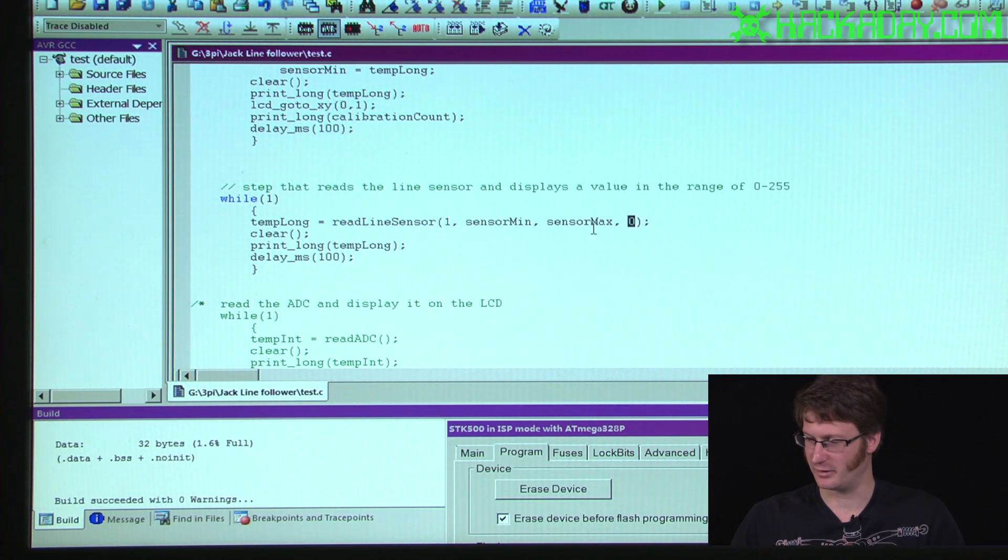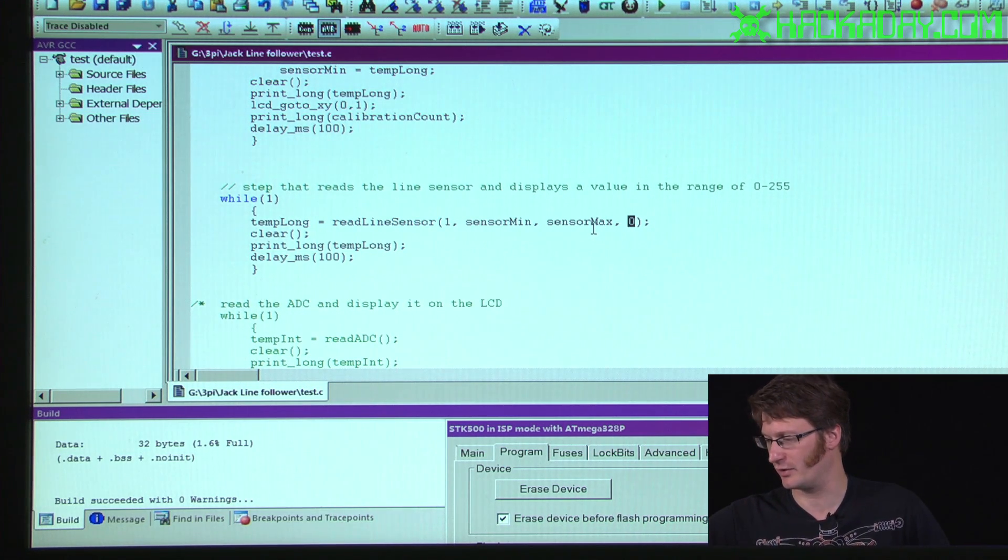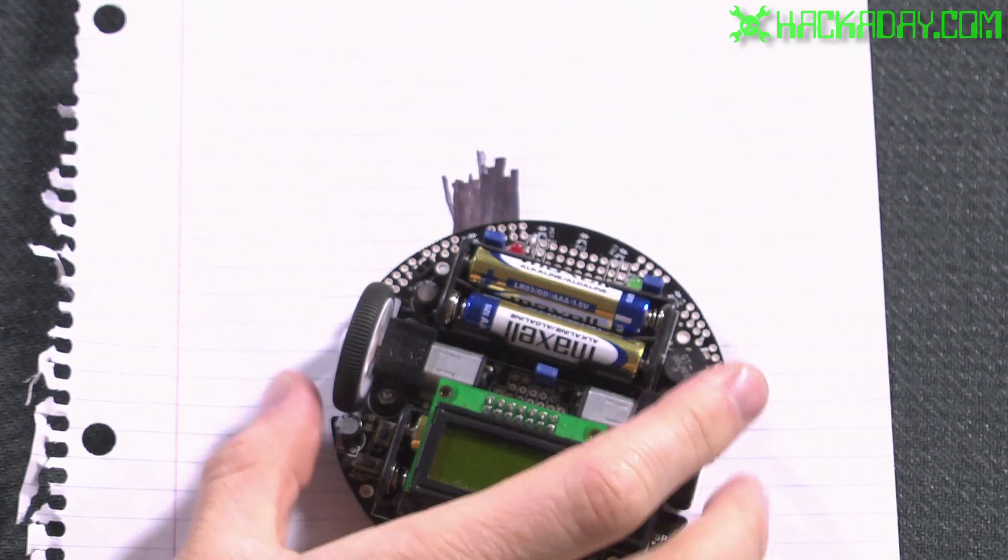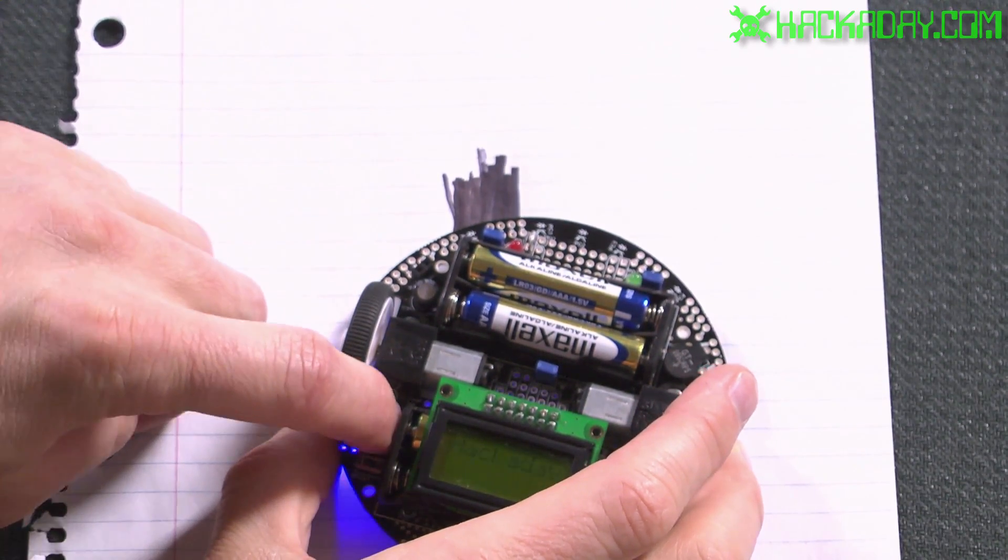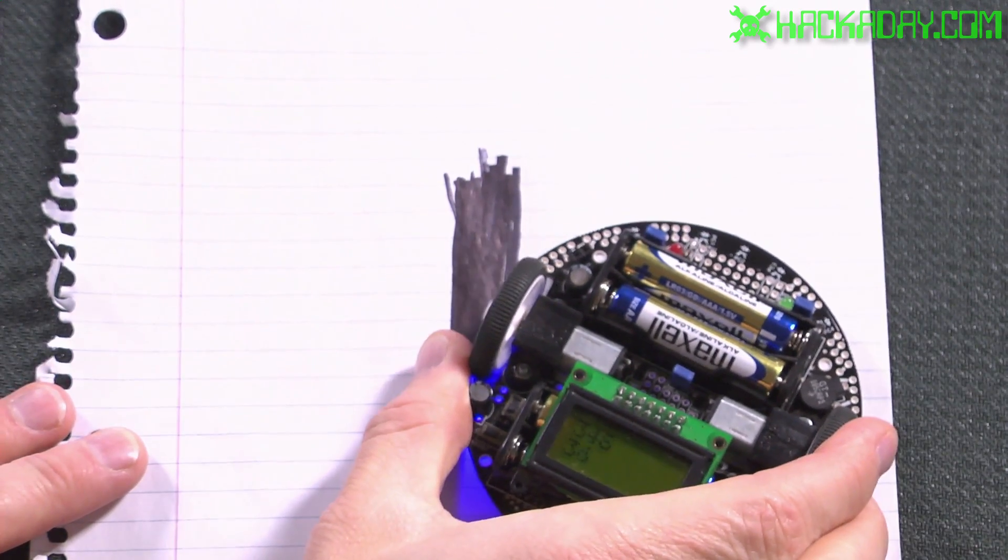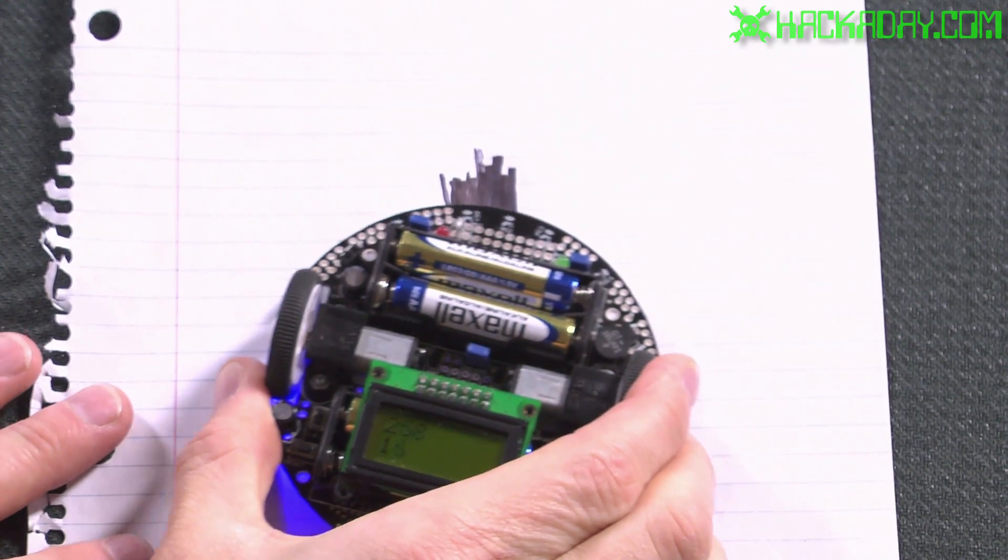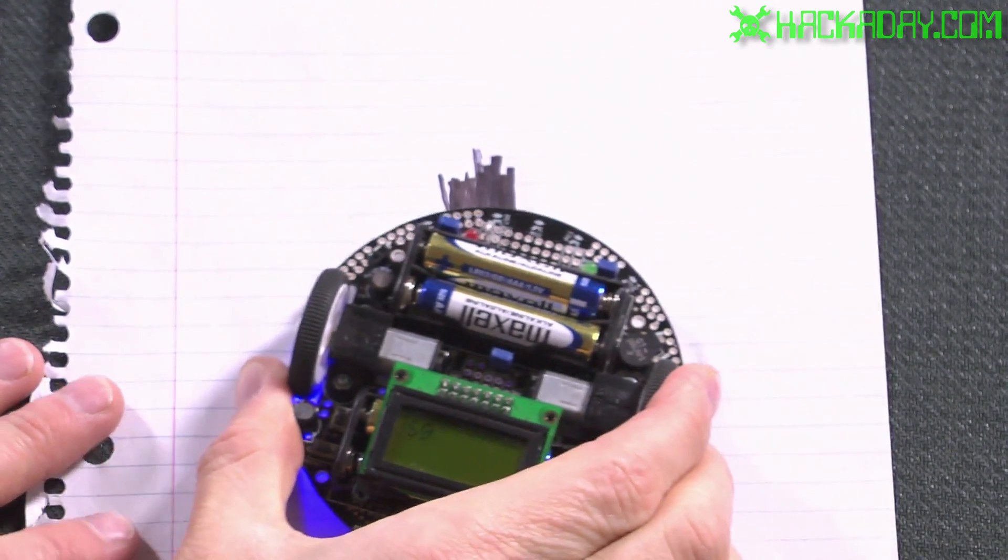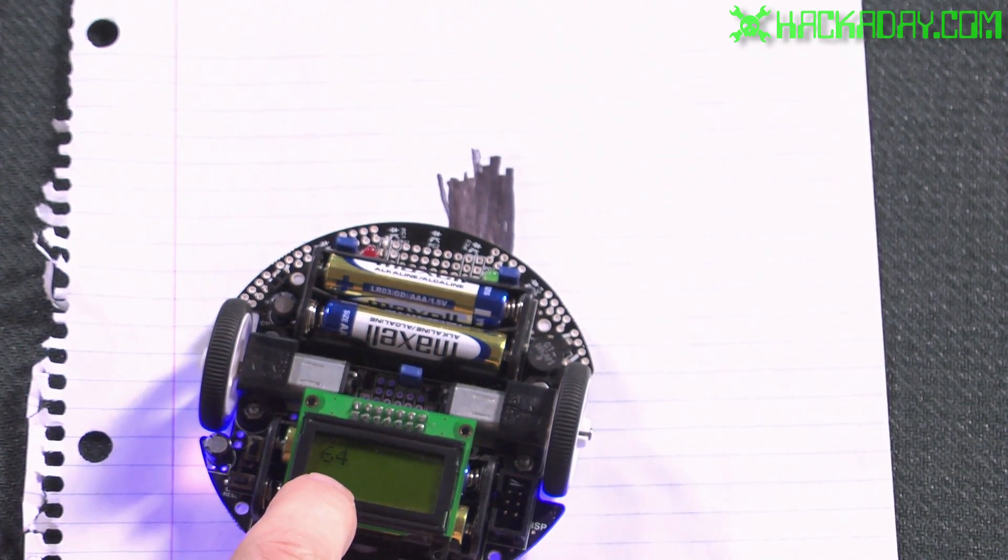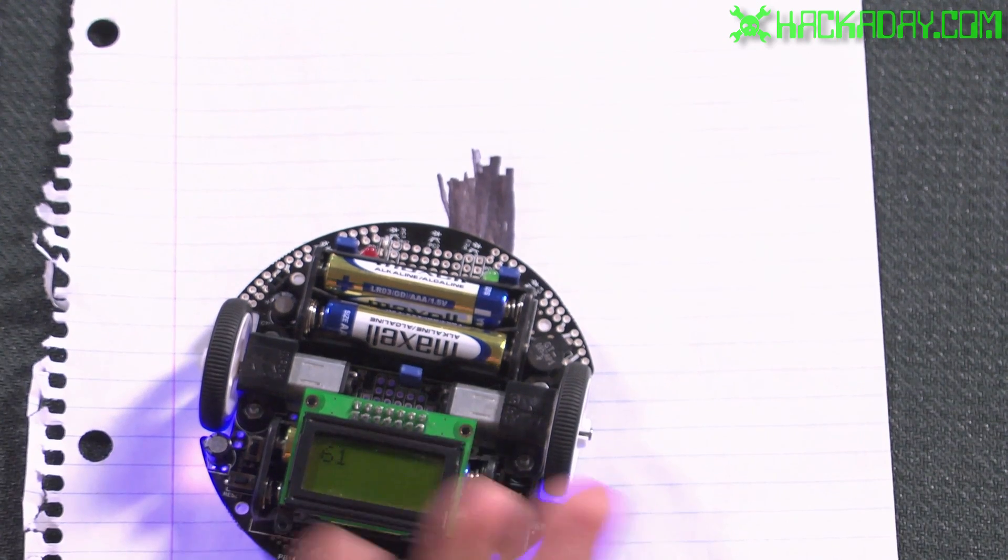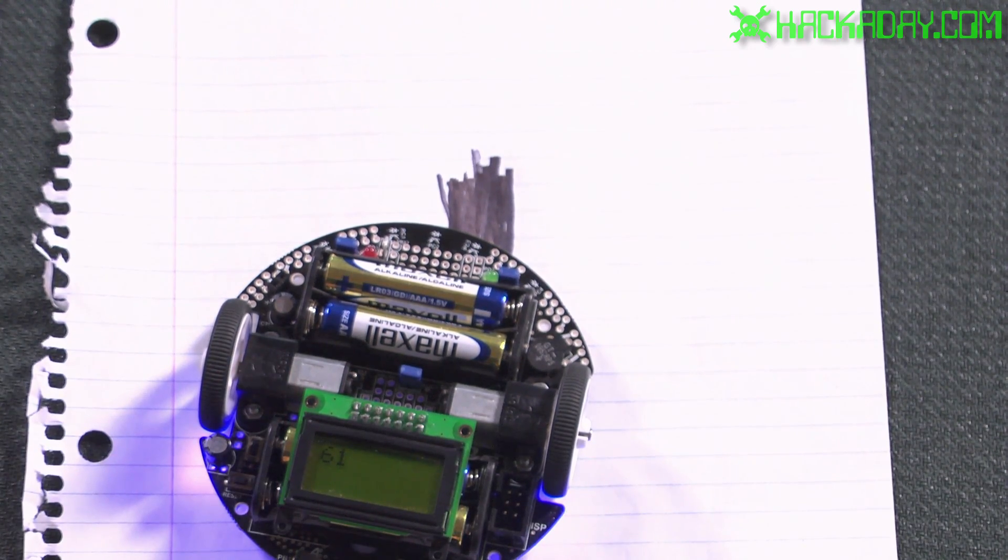So, let's take a look at what this does. I've taken a sheet of paper, and if we can go to our overhead camera once again. So, I am turning on the robot, and the top line is the raw reading that it is seeing. And the bottom line was a countdown for how many units or how much time it had left in the calibration routine.